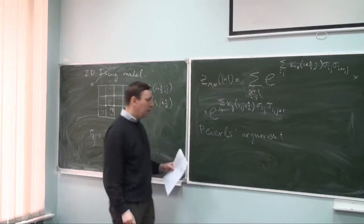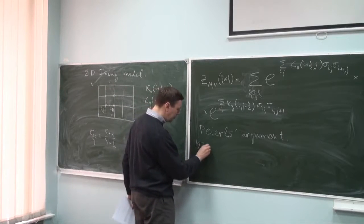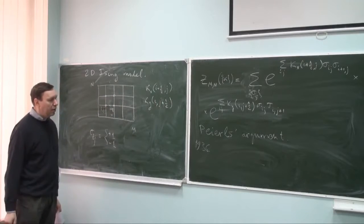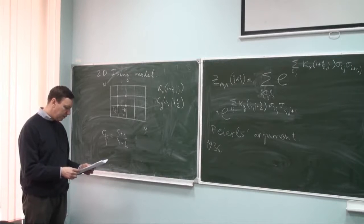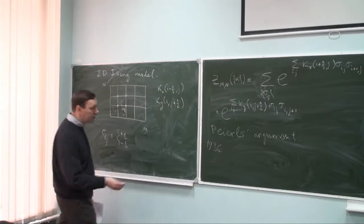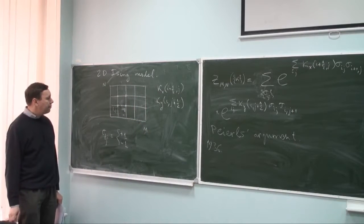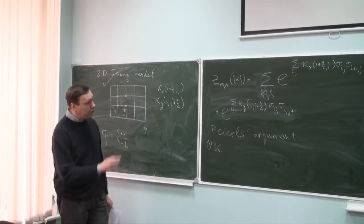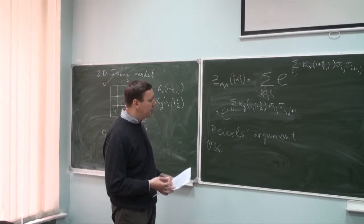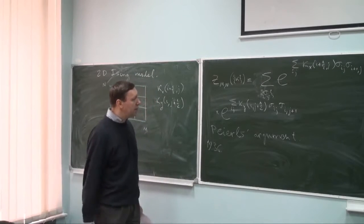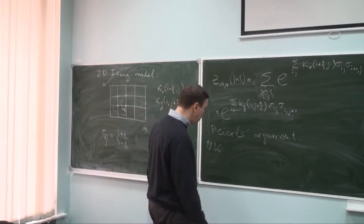The first major result is due to Rudolf Peierls. In 1936 he wrote a paper 'On the model of Ising for ferromagnetism,' proving the existence of a phase transition in the two-dimensional model with uniform couplings.